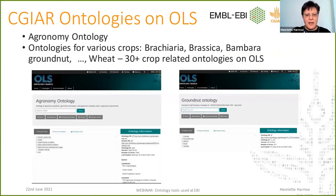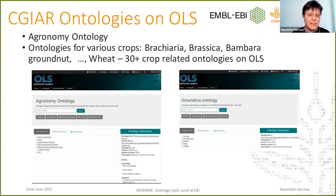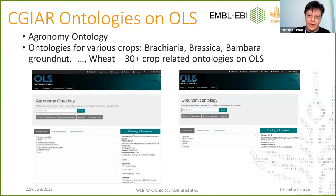If we look at OLS, CGIAR has a number of ontologies already on OLS. On the left-hand side you'll see the agronomy ontology that is available on OLS, but there are also various crop-related ontologies. As far as I can see, there are at least 30 crop-related ontologies — but I think it's even more than that. So there are quite a few crop-related ontologies on OLS at the moment.